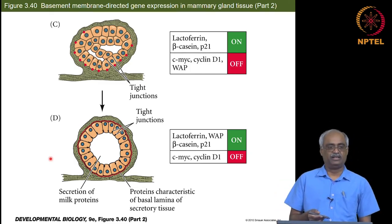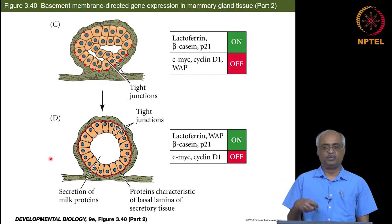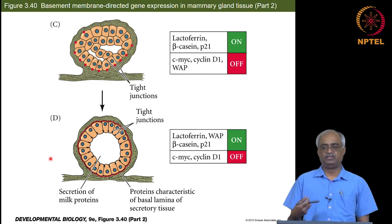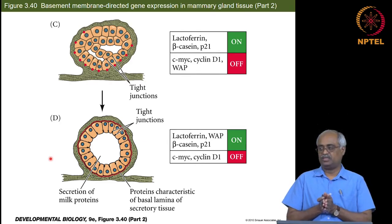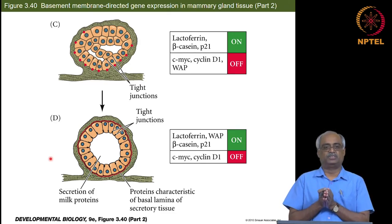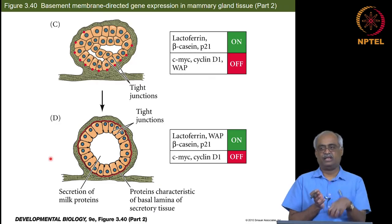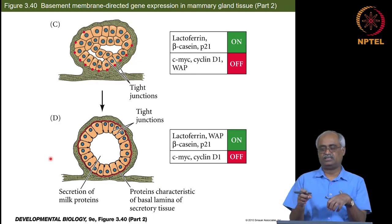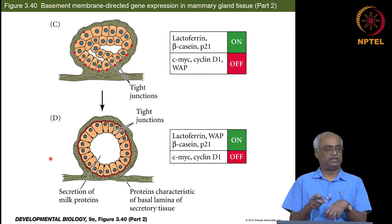The cells then form the basal lamina all around, creating the tube structure. The differentiated cells on the luminal side now produce casein and lactoferrin. In the next stage, whey protein is also produced — all milk components are made — and proliferation is now stopped. Tight junctions also form, preventing luminal content from leaking, which is critical. Similar tight junctions are also seen in the intestinal mucosa.